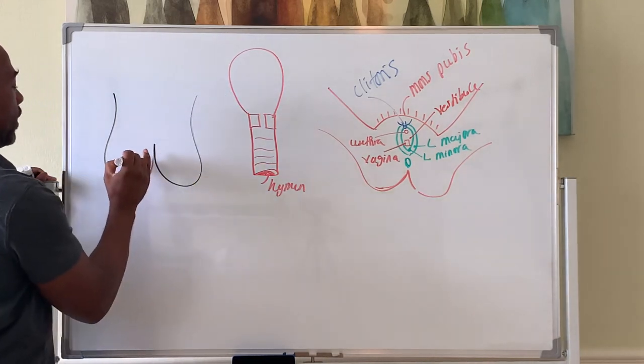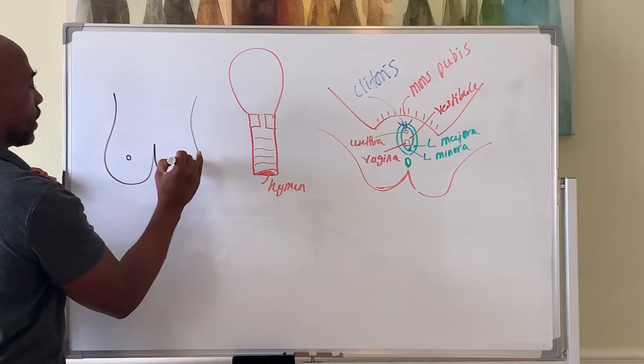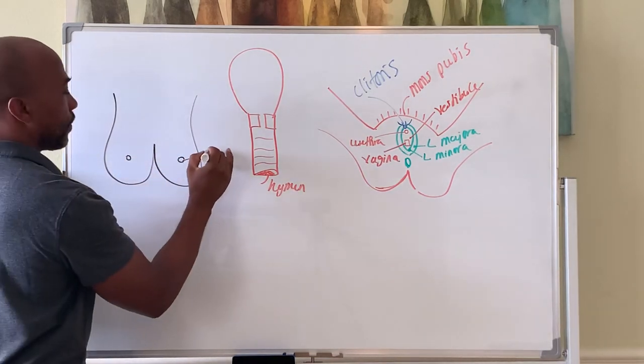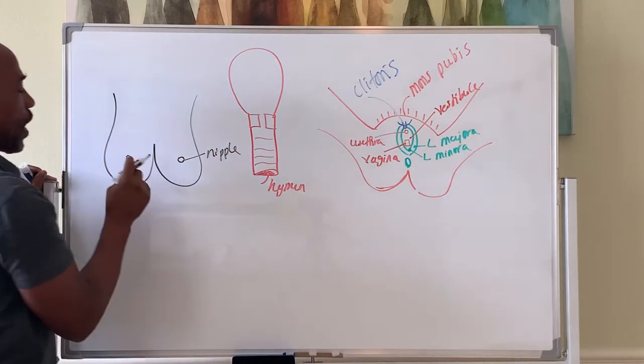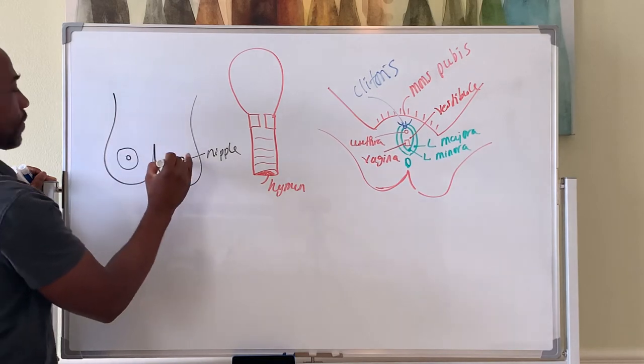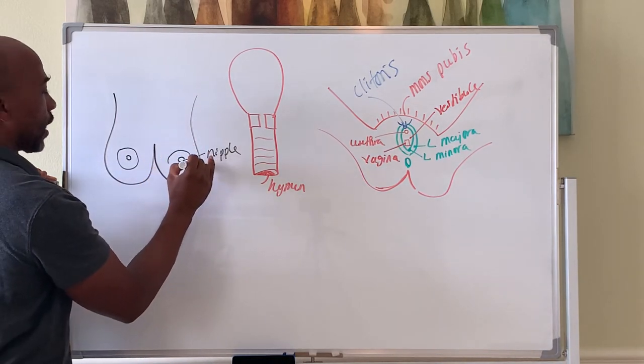You have a nipple in each breast, and around each nipple is a darkened area, especially darkened during pregnancy, called the areola.